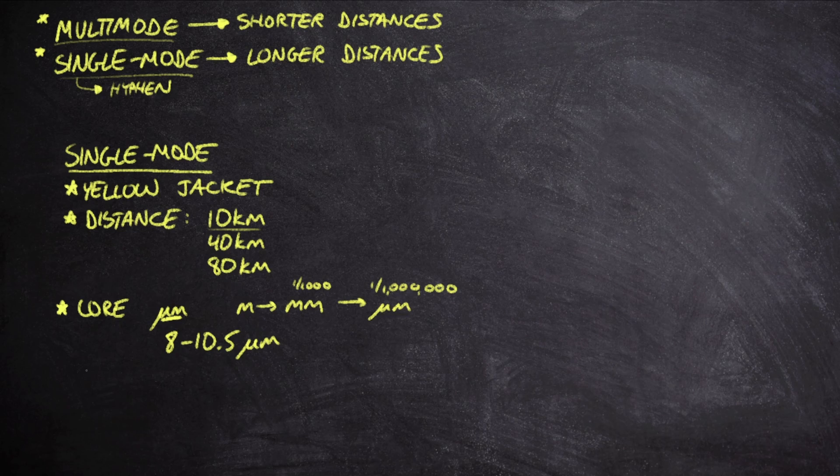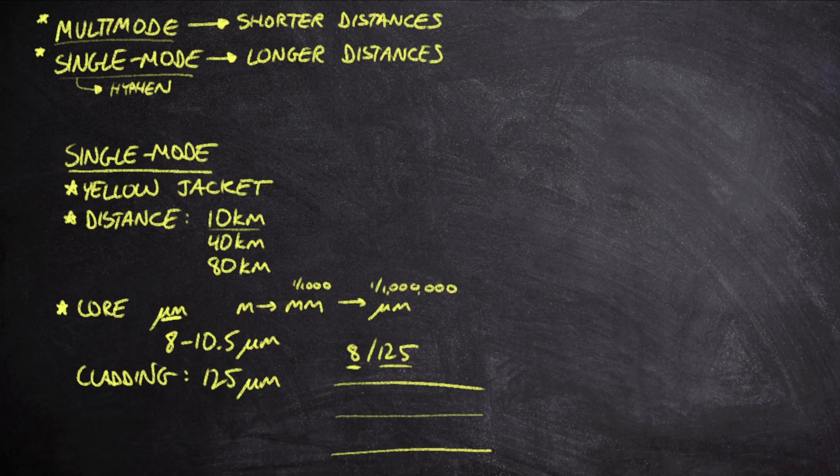Whereas the cladding is much larger, it is 125 micrometers. So you might see it written as something like 8/125. This is indicating the diameter of the core versus the diameter of the cladding. The cladding is much larger. You're truly talking about cladding that's this large and then a core that's maybe something like this in the middle. Lots of cladding in single-mode fibers.